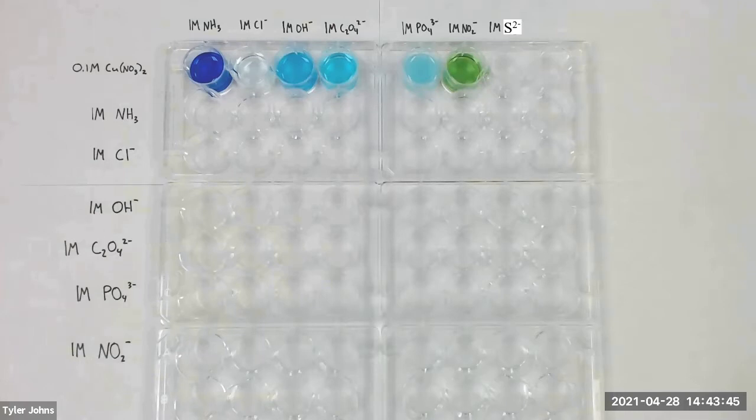In the second row of wells, we will make the same mixtures as we did in the first row. Then we will add one milliliter of one molar ammonia to the second through sixth wells of row 2. We don't need to test ammonia with ammonia.